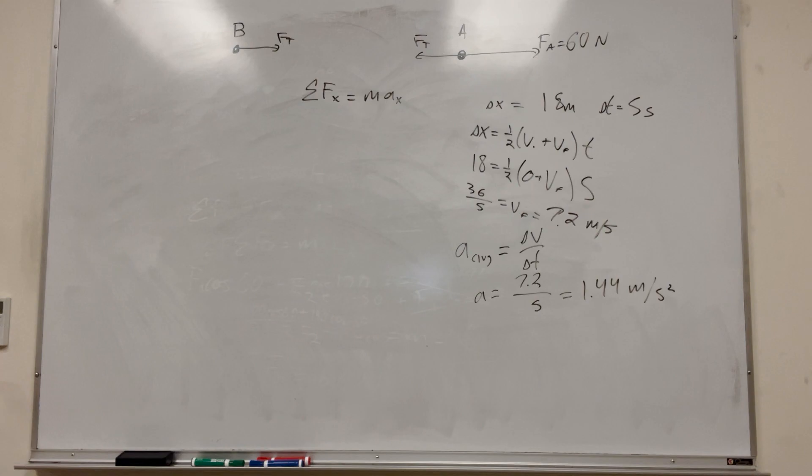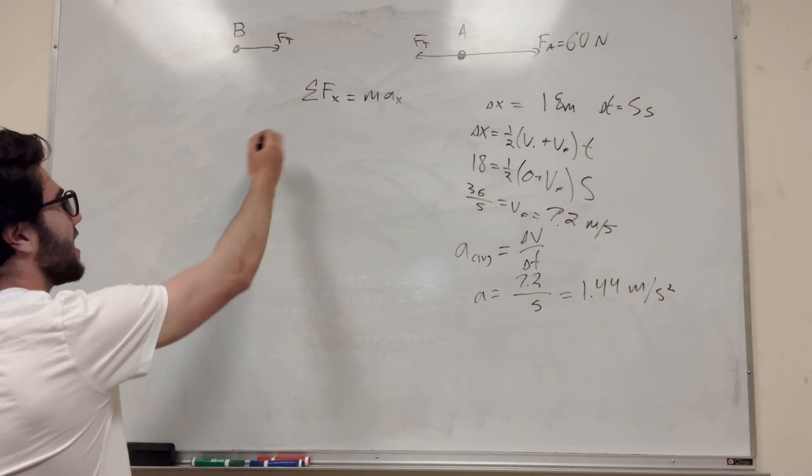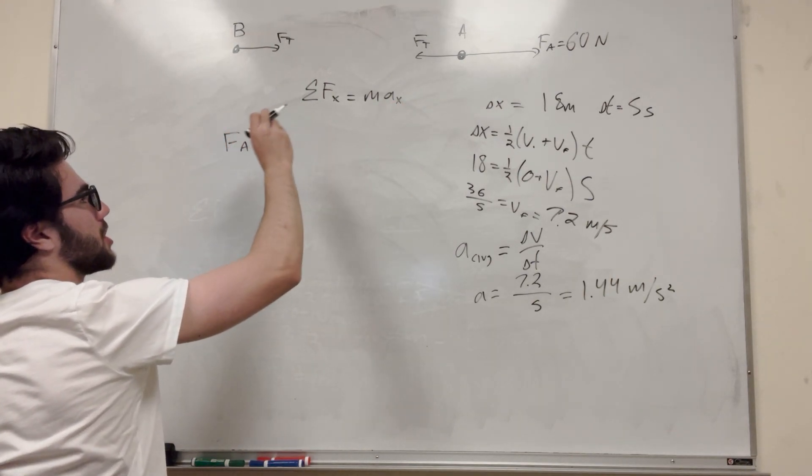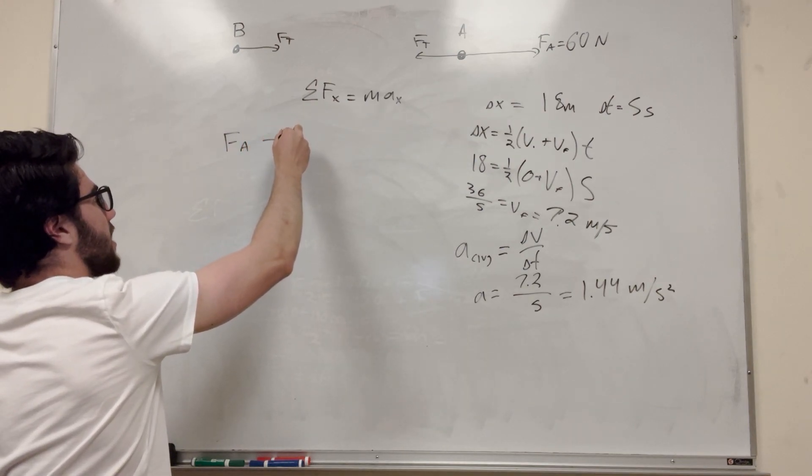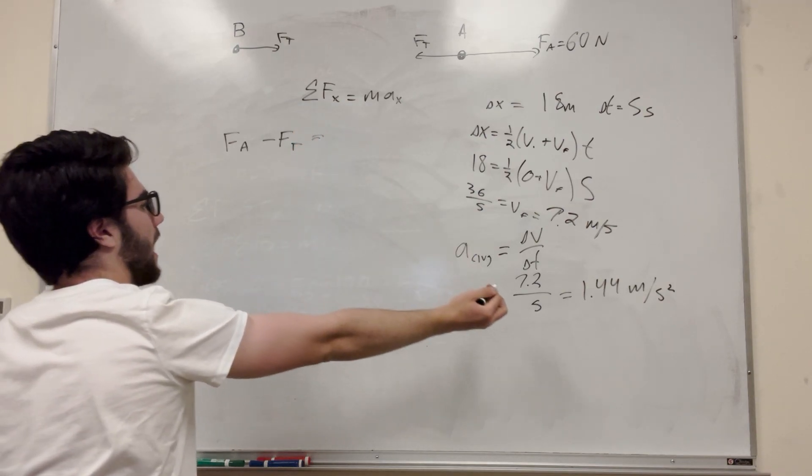Okay, so now we can actually start plugging things into our problem here. A bit of side work. That's actually the hardest part in my opinion. So we look at this. So we have force of A is pushing in the positive direction, and force of tension is pushing against it. So this is sum of our forces.